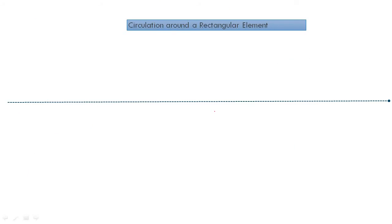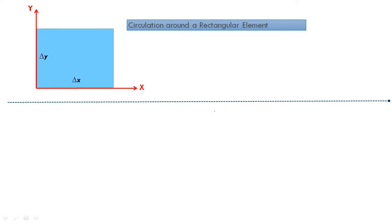For analysis, we take circulation around a rectangular fluid element. We consider a two-dimensional rectangular fluid element in the xy-plane. This is a magnified view of the fluid element — its dimension along the x-axis is delta x and along the y-axis is delta y. Along the x-axis and y-axis the element has velocity components; u and v are the velocities in the x and y directions respectively.